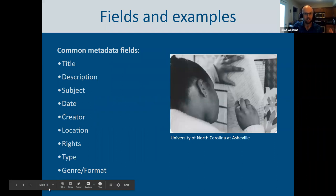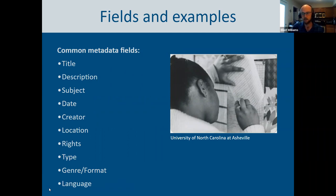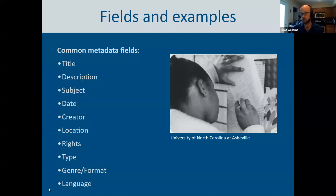Now let's get into the nitty gritty — some of the fields and elements commonly used to describe digital collections. These are common fields, but depending on your type of collection or materials, you may want to add others. Many digital library collections use terms from Dublin Core, which is where most of these come from. We're going to cover a small subset of Dublin Core terms today, but these fields are generally applicable no matter what metadata schema you use.